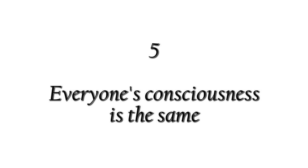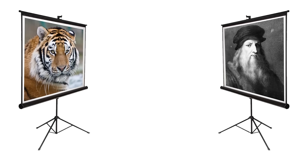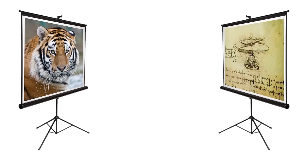5. Everyone's consciousness is the same. If consciousness is a blank screen that can experience everything projected onto it, this means that the consciousnesses of all people are identical. In fact, they are identical to the consciousnesses of animals and any other sentient beings. What distinguishes humans and other sentient beings is the structure of their mind and its contents.